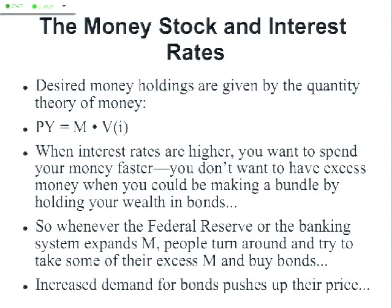Whenever the Federal Reserve or the banking system expands M, people will turn around and try to take some of their excess money and buy bonds with it. When the Federal Reserve expands M, demand for bonds goes up, and increased demand for bonds pushes up the price of bonds — simple supply and demand. People say they'd rather have their cash in 10-year treasury bonds or 3-month treasury bills. And here things get complex, because the prices and the interest rates on bonds move in opposite directions: when the price goes up, the interest rate goes down; when the price goes down, the interest rate goes up.